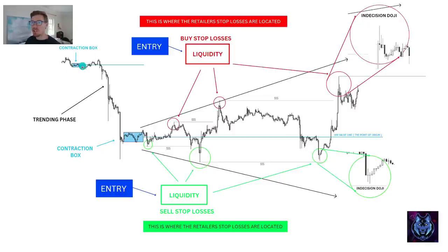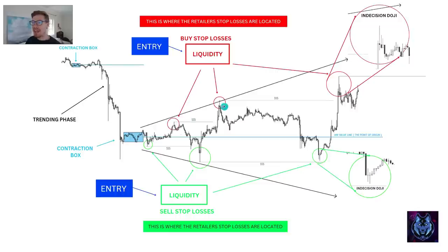Over here we have these contraction boxes. Price breaks below the box and goes into this trending phase where it starts to form another contraction box. Then we have this whipsaw action which liquidates the masses and the retailers. If you understand how institutional trading works, they play with such large positions — the only places they can enter the market is when the masses make a mistake.